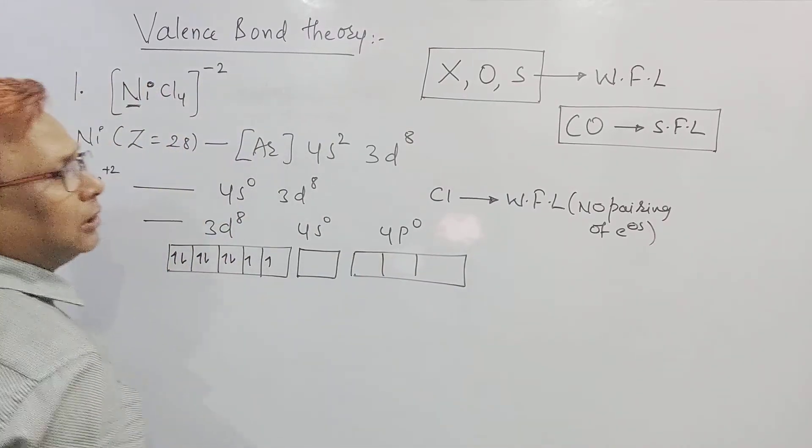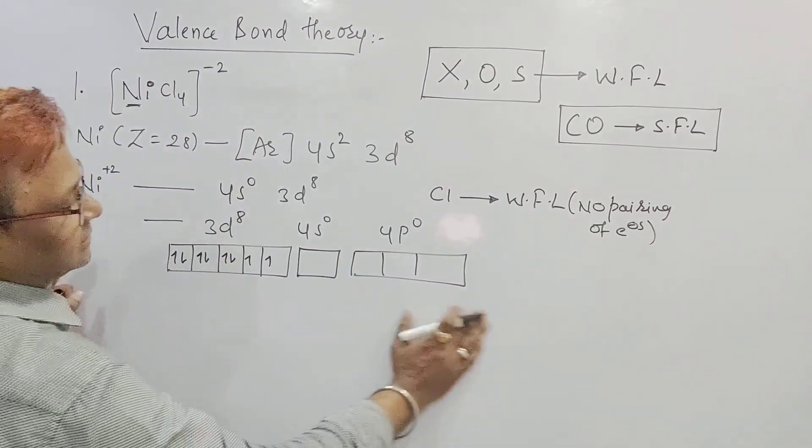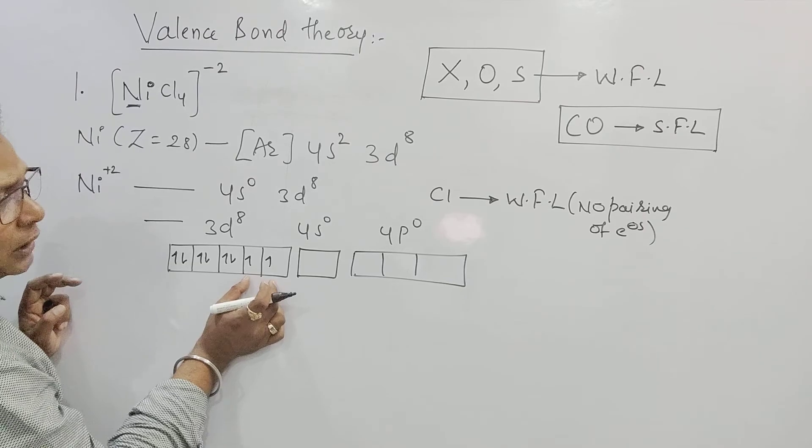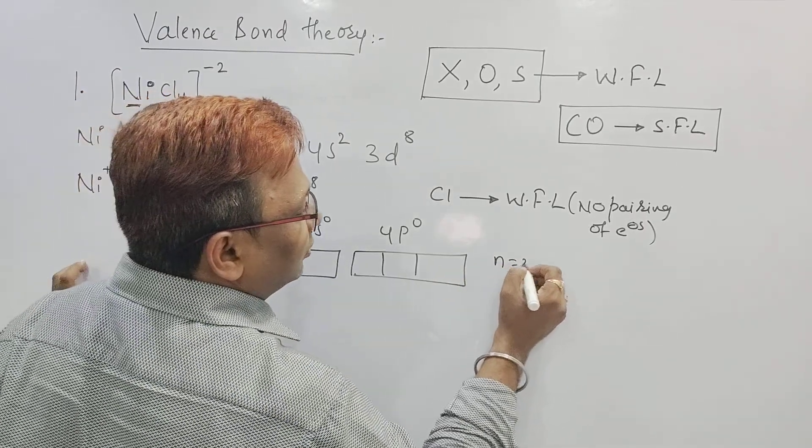No pairing of electrons means I should leave as it is. So it indicates 2 unpaired. Obviously my n is equal to 2.